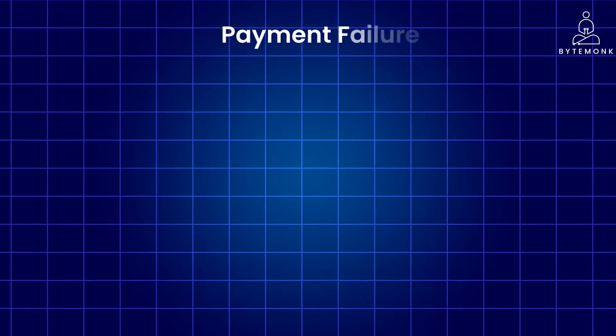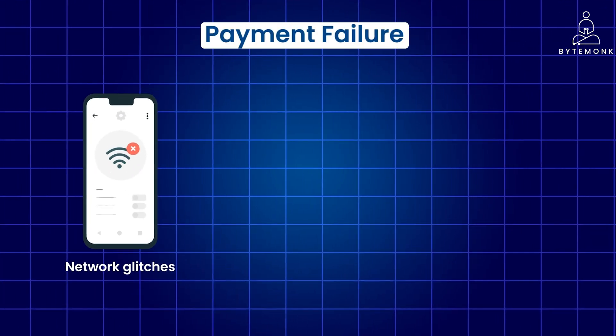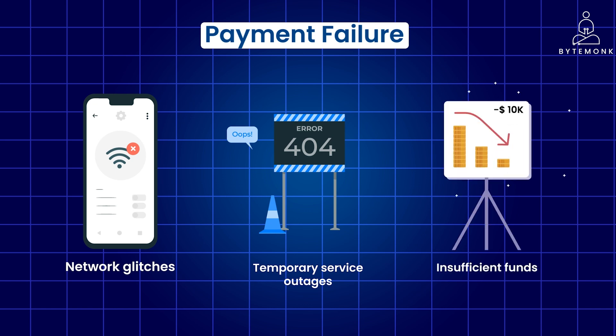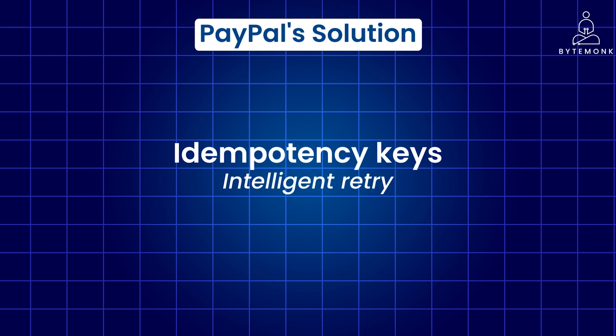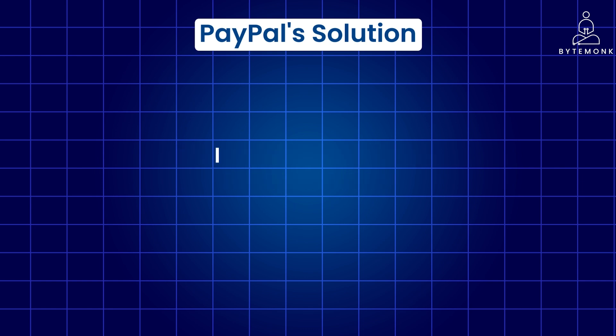When a payment fails, it could be due to transient issues like network glitches, temporary service outages, or insufficient funds. In such cases, retrying the payment after a short interval might succeed. However, simply retrying without considering idempotency can lead to duplicate payments if the original request was actually processed but the response was lost. PayPal combines idempotency keys with intelligent retry mechanisms to address this challenge. For certain types of failures — for example, network timeouts — PayPal might attempt an immediate retry with the same idempotency key.